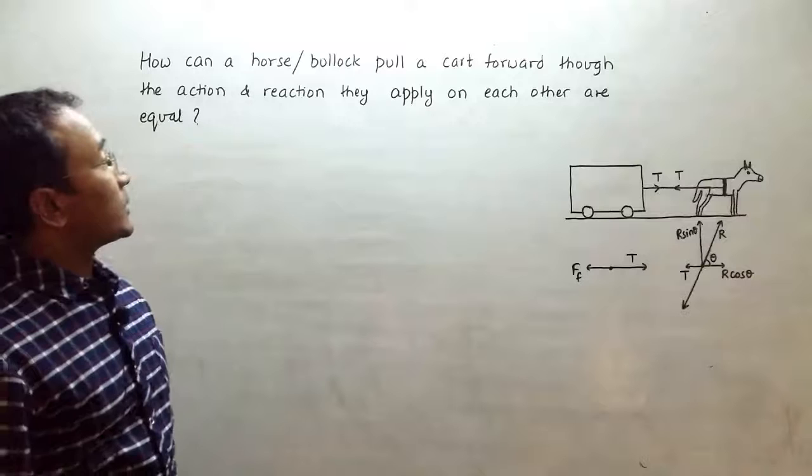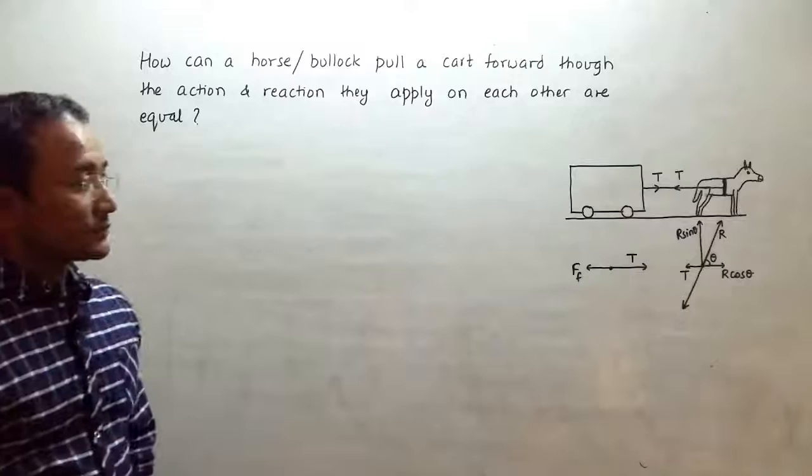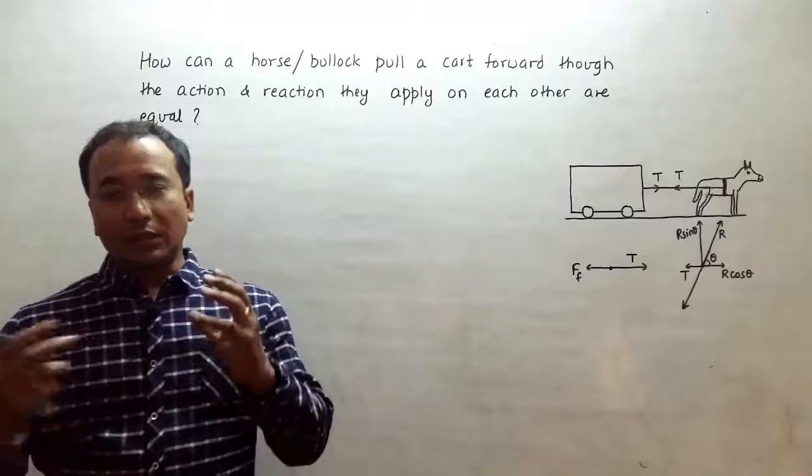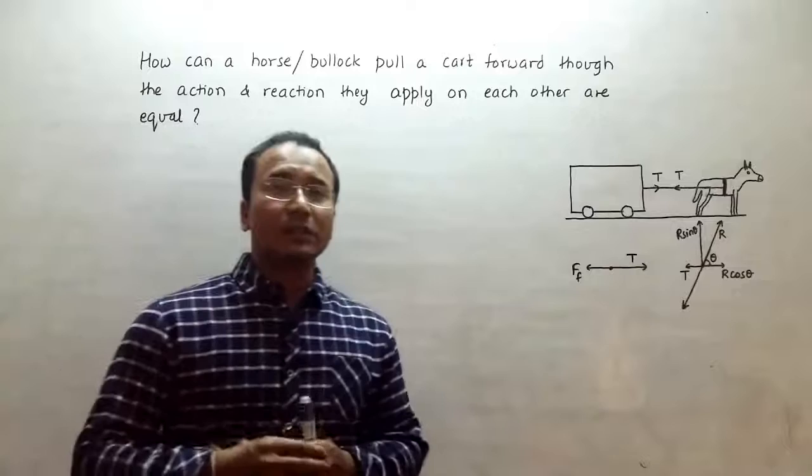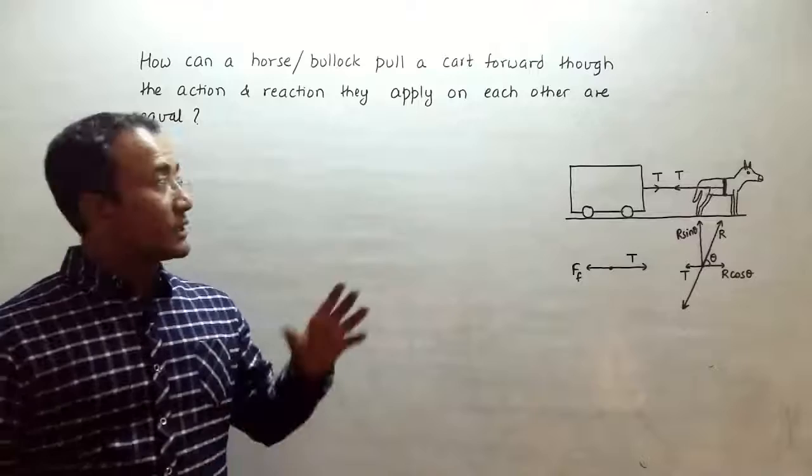Hello, the question for today is: how can a horse or bullock pull a cart forward though the action and reaction they apply on each other are equal? It's a common argument that when a horse pulls a cart, the cart and the horse pull on each other with equal forces—action and reaction are equal—so that's why the cart should not move forward. That's the logic given by people. Let's see whether it's true or not.